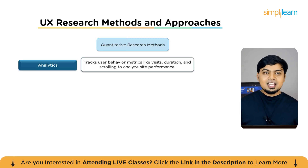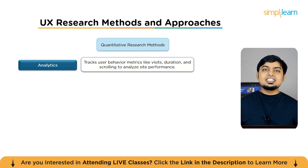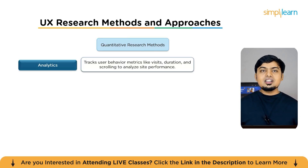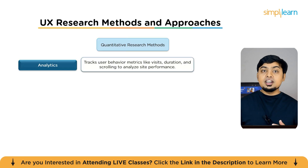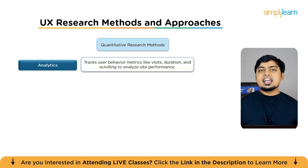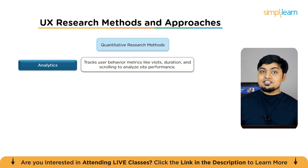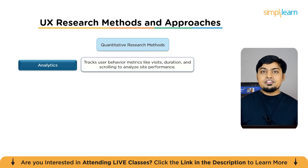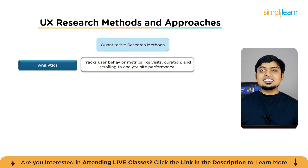Quantitative methods are further classified into various strategies. First is analytics — a quantitative approach that deals with data collection such as the number of visits by a user to a website, duration on a website, scroll depth, and more. The best-known analytics platform is Google Analytics. From this information, UX researchers can identify site traffic trends and product performance.